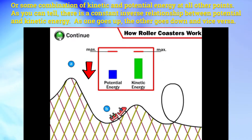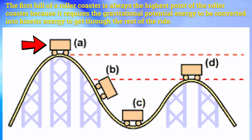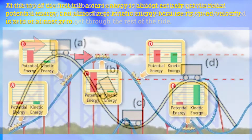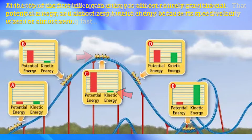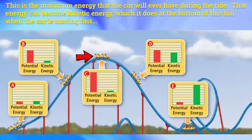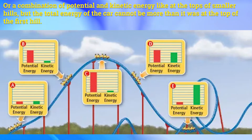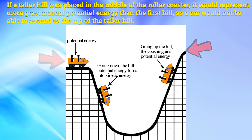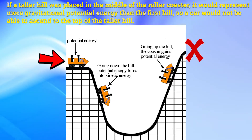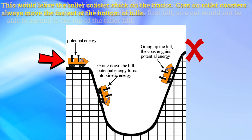The first hill of a roller coaster is always the highest point because it requires the gravitational potential energy to be converted into kinetic energy to get through the rest of the ride. At the top of the first hill, a car's energy is almost entirely gravitational potential energy and almost zero kinetic energy because its velocity is zero or almost zero. This is the maximum energy that the car will ever have during the ride. That energy can become kinetic energy at the bottom of the hill when the car is moving fast, or a combination of potential and kinetic energy at the tops of smaller hills. But the total energy of the car cannot be more than it was at the top of the first hill. If a taller hill were placed in the middle of the roller coaster, it would represent more gravitational potential energy than the first hill, so the car would not be able to ascend to the top of the taller hill — this would leave the roller coaster stuck on the tracks.